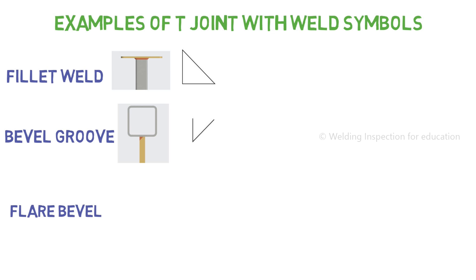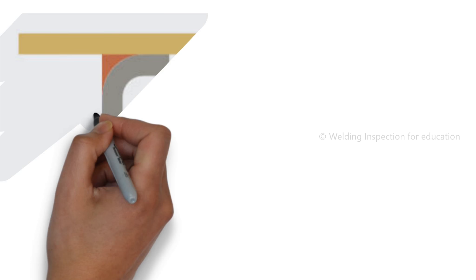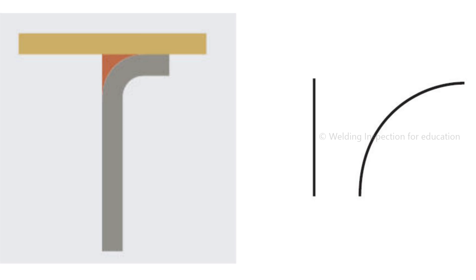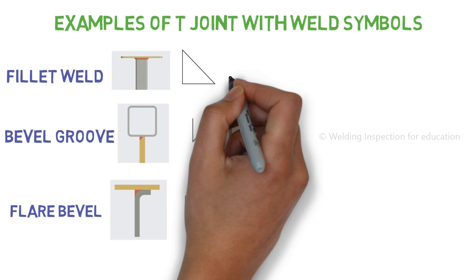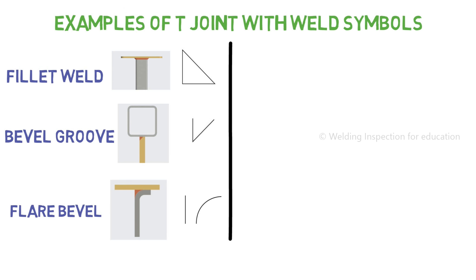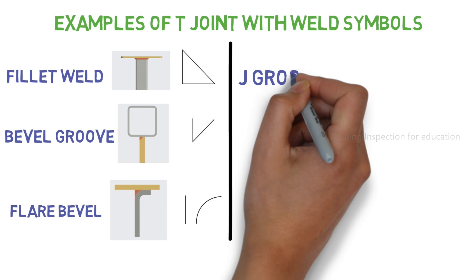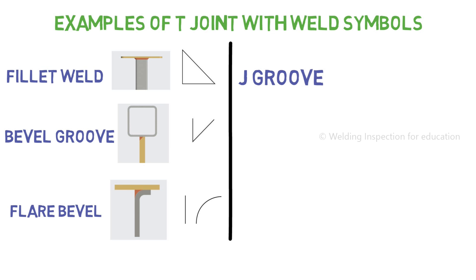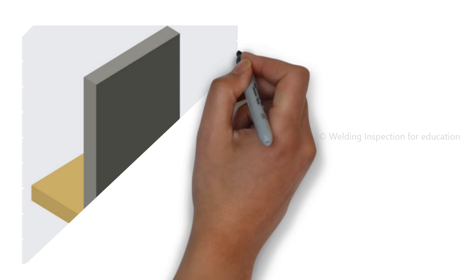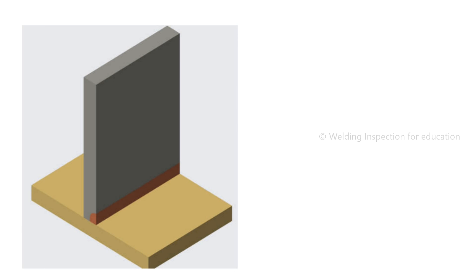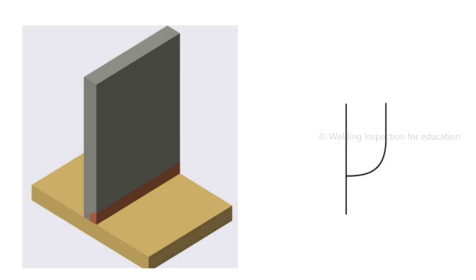Flare bevel T joint means a connection between two perpendicular surfaces where one is flat and the other has a radius. Similarly, J groove T joint means one surface is flat and the other has a radius, and they both make a 90-degree connection — but in this case the radius is inward, opposite to the flare bevel.